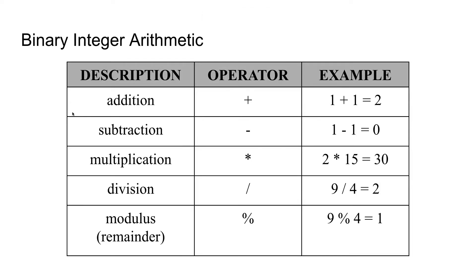Next, let's look at some binary integer arithmetic. The five binary integer arithmetic operations are addition, subtraction, multiplication, division, and modulus (the remainder). The operators are +, -, *, /, and %. These are the exact operators you will use in your programs to perform these operations, and they each take two operands.